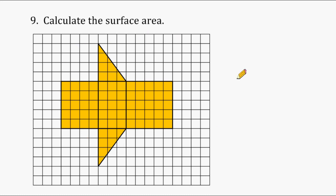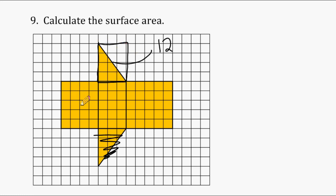What we have here is a triangular prism. When we have two congruent right triangles, we can treat them as a single rectangle. This triangle down here could be flipped over and joined with the other triangle to make a rectangle. So we have a 3 by 4 rectangle, which results in an area of 12 for both triangles. This rectangle is 5 by 4, giving an area of 20. This rectangle is 5 by 3, which is 15. And this one is a 5 by 5 square, which has an area of 25.